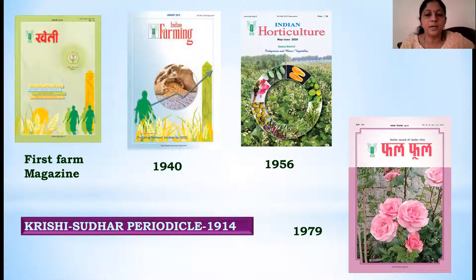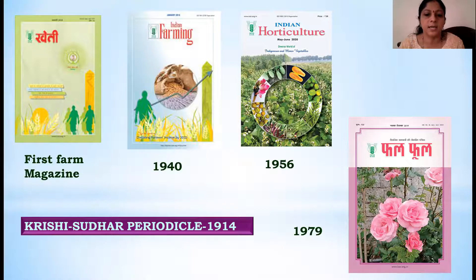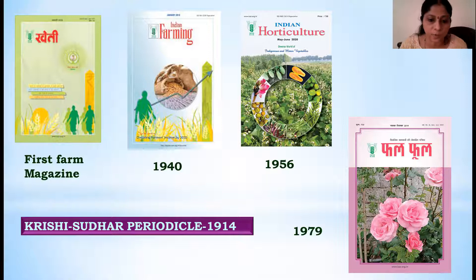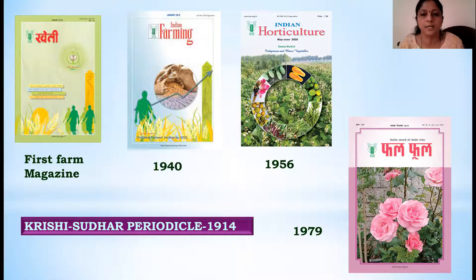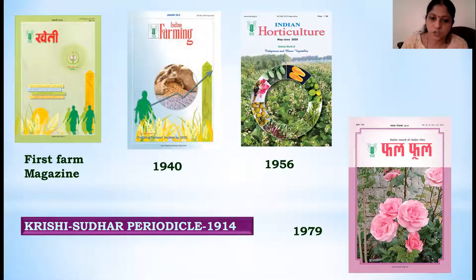Now we will see some of the important agriculture journals. Kethi was the first farm magazine published in India, back in 1914 by ICAR. Next, it was followed by Indian Farming, published in 1940, and Indian Horticulture in 1956. Kethi is also available in Hindi language, published in 1979. Krishi Sudhar was the first periodical published by ICAR in 1940 - now it is not there, but all other magazines continue with different names. These were the initial journals and periodicals in the agriculture field, but now we can find many journals from different publishers.